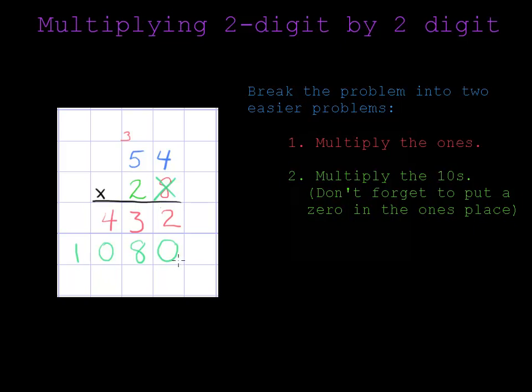And what I end up writing is the correct answer, which is 1,080, because it's not two times 54, which is 108, rather 20 times 54. So I have to add this extra zero.